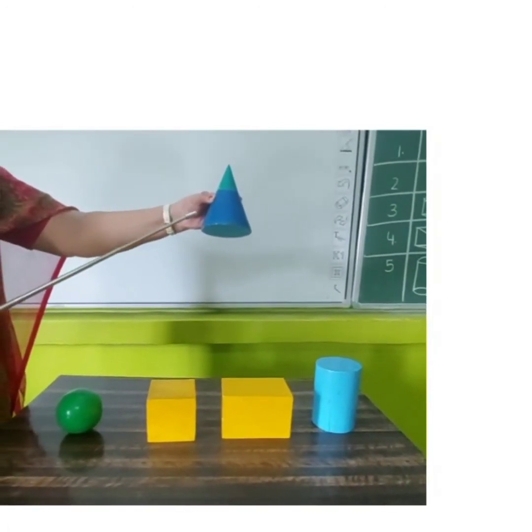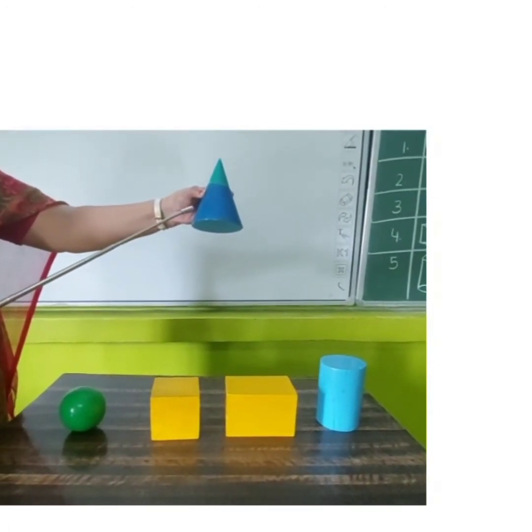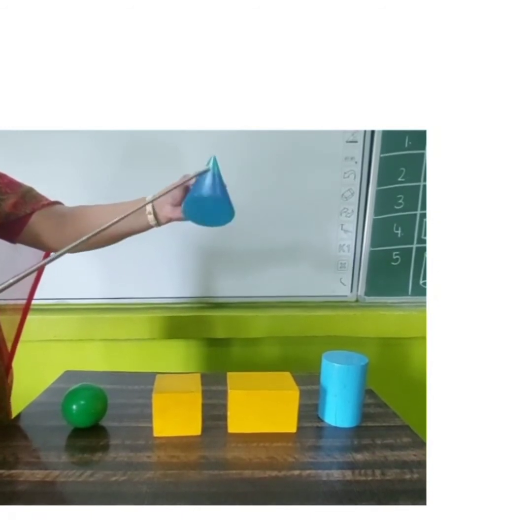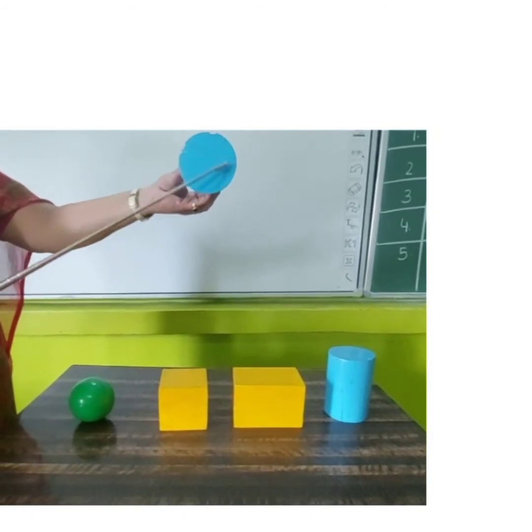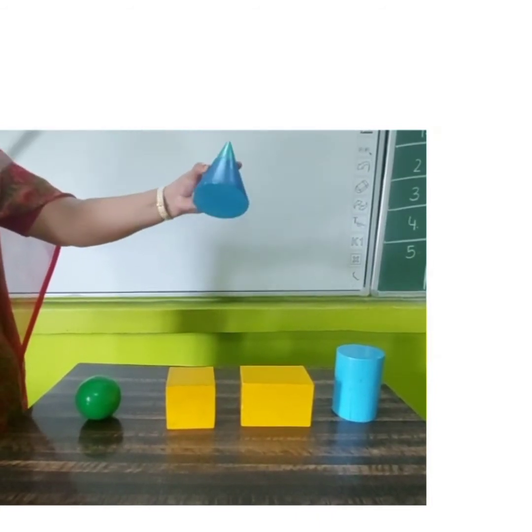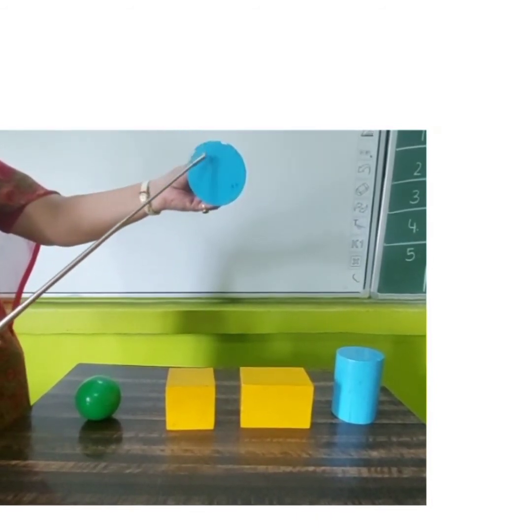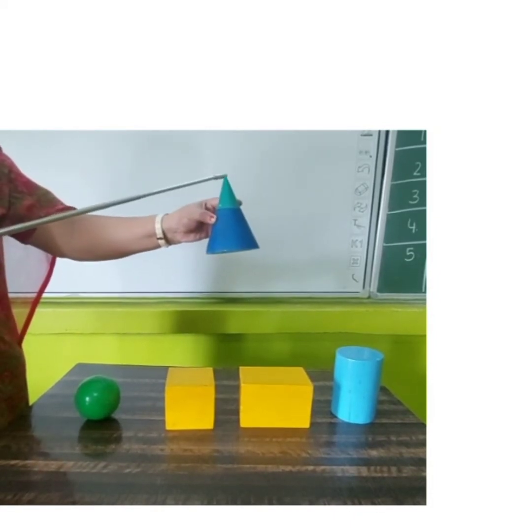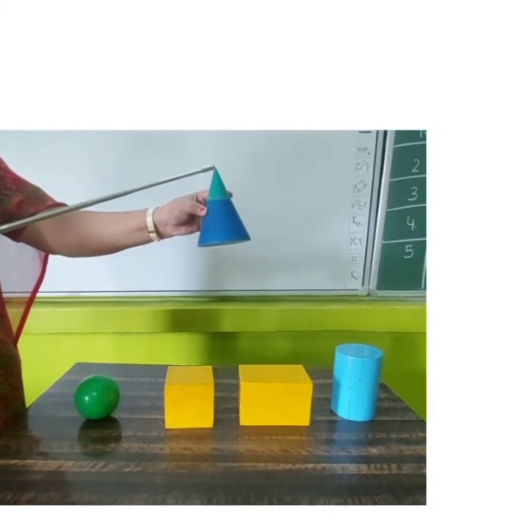Our second 3D shape is a cone. It has two faces, one is the flat face and the other one is the curved face, and it has one side and one corner which is also called the tip of a cone.